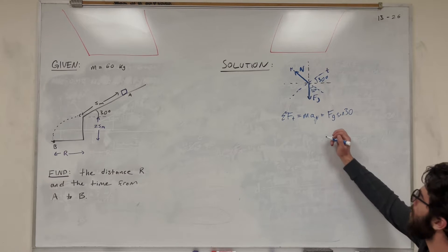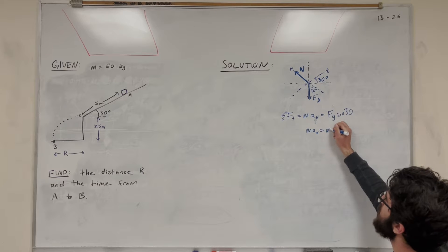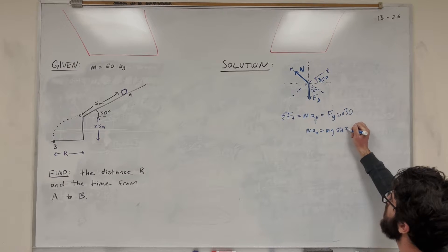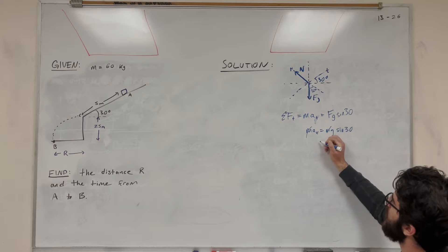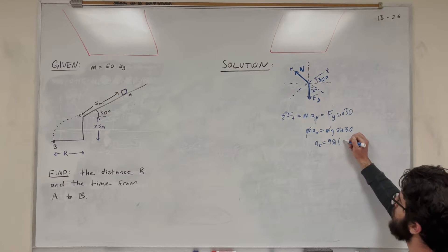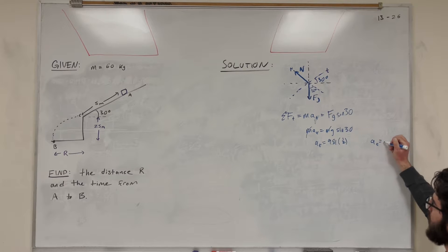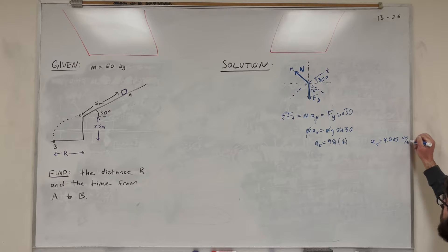So now let's solve. It's going to be mass times acceleration tangent equals mass times gravity times sine of 30. The masses are going to cancel, and acceleration tangent is going to be equal to 9.81 times sine of 30, which is 1 half. The acceleration in that tangent direction is going to be equal to 4.905 meters per second squared.